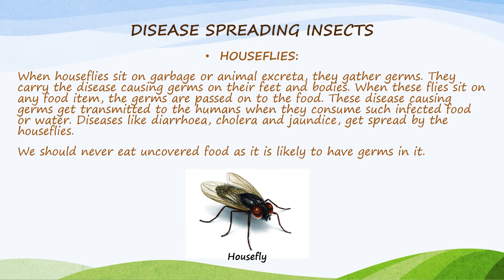There are some insects which are responsible for spreading diseases. Let us start with disease spreading insects — house flies. When house flies sit on garbage or animal excreta, they gather germs. They carry the disease causing germs on their feet and bodies. When these flies sit on any food item, the germs are passed on to the food. These disease causing germs get transmitted to humans when they consume such infected food or water. Diseases like diarrhea, cholera, and jaundice get spread by house flies.